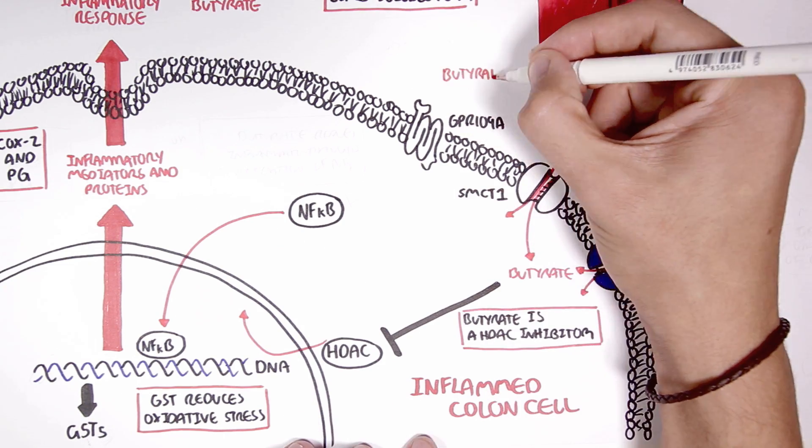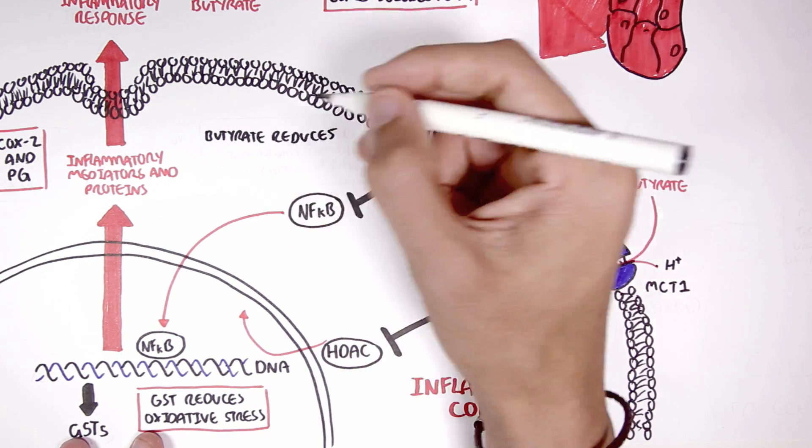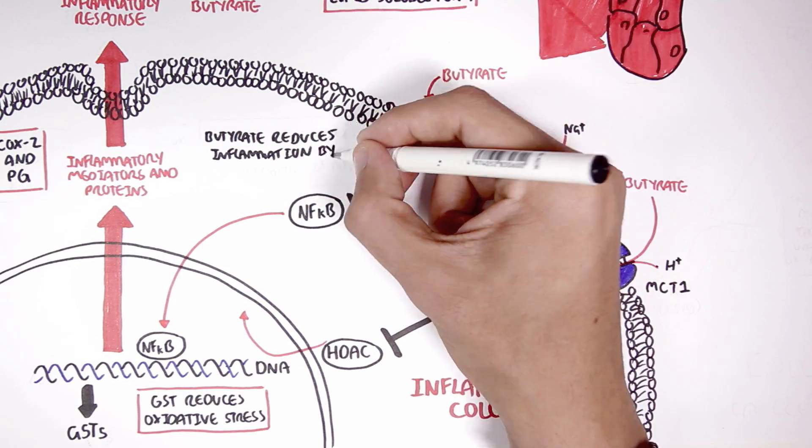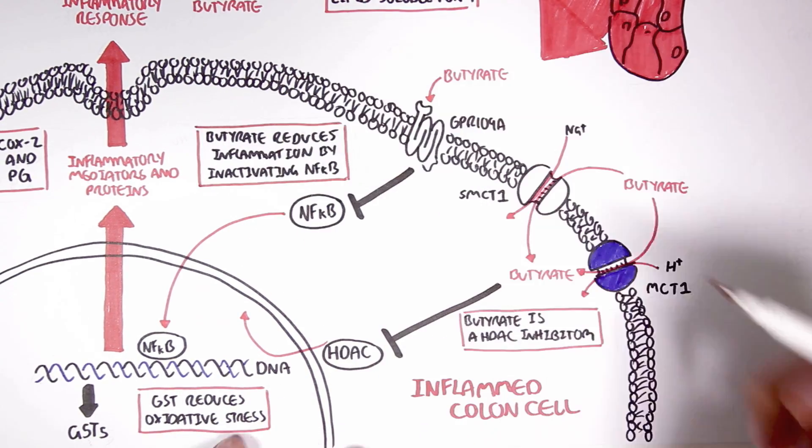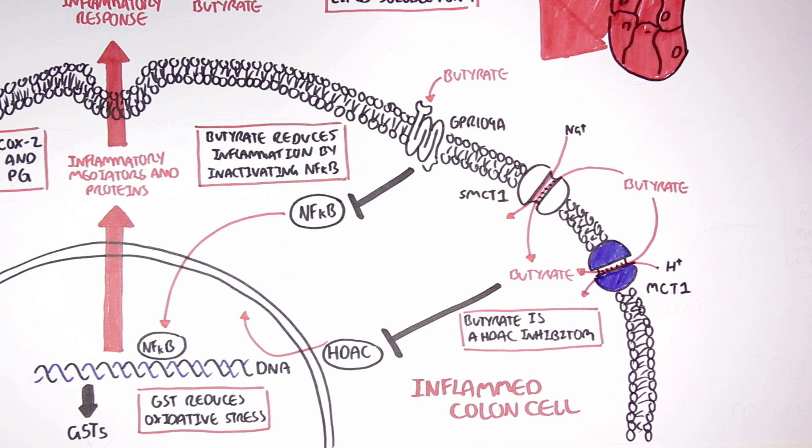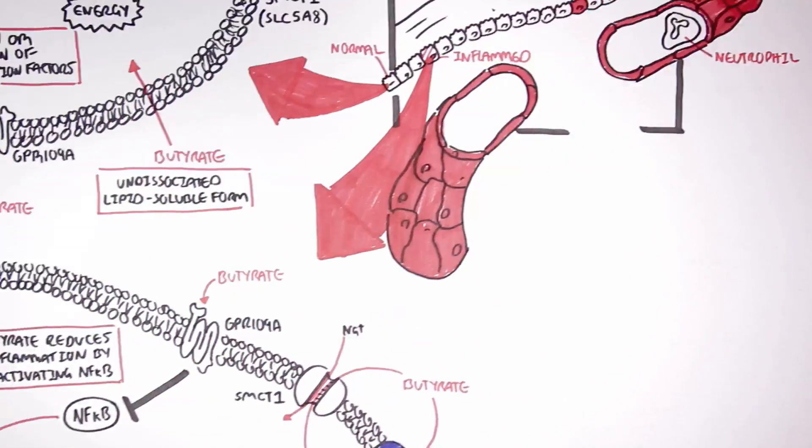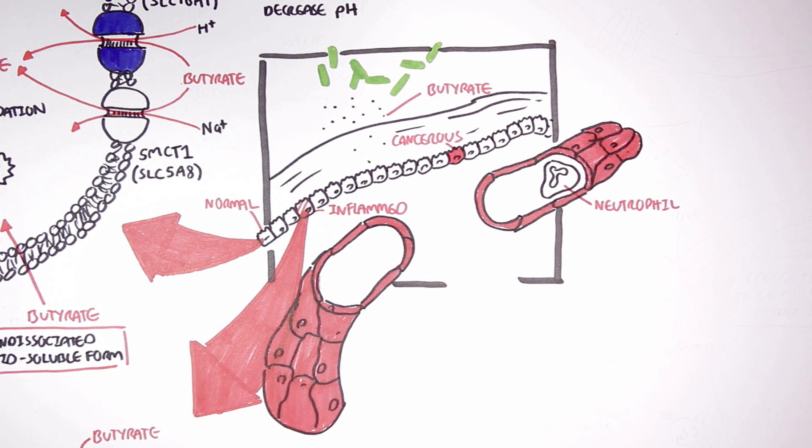Butyrate mainly reduces inflammation by inhibiting nuclear factor kappa B through the G-protein receptor 109A, thus inhibiting the production of inflammatory proteins. So that was the effect butyrate have on an inflamed colon cell.